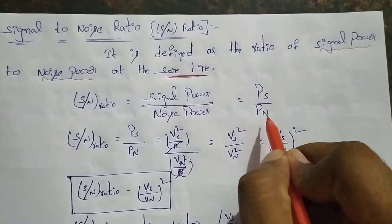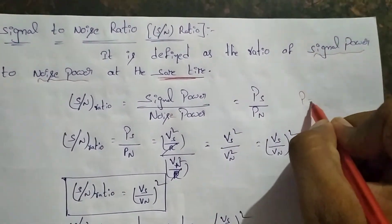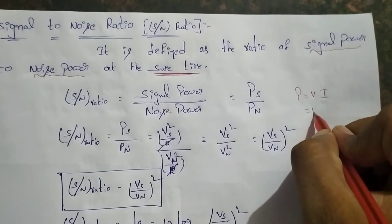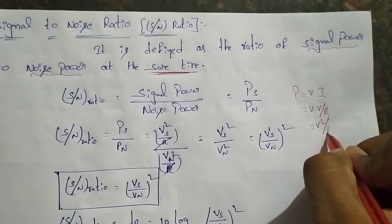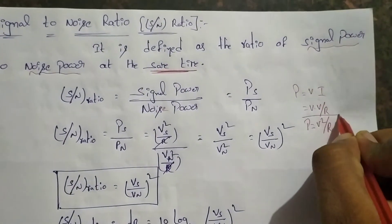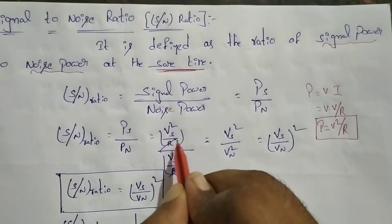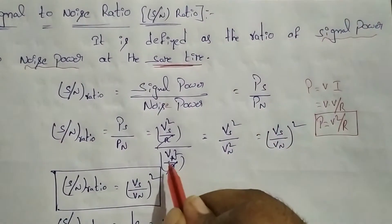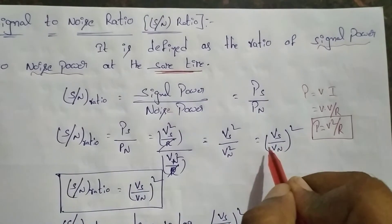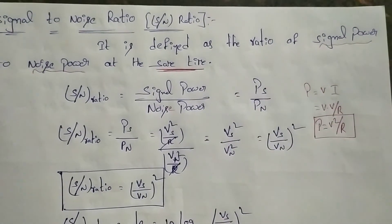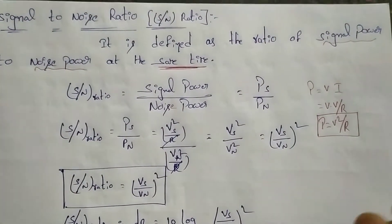Signal power is Ps and noise power is Pn. Power is equal to V times I, and I equals V over R, so power is V squared over R. Therefore Ps equals Vs squared over R, and Pn equals Vn squared over R. The R values cancel, giving us Vs over Vn, whole squared. That is the voltage of signal to voltage of noise ratio.